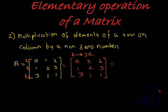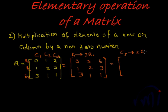We can also do the same elementary operation on columns. Suppose we take column c3 and multiply by 2: c3 becomes 2 times c3. We get 2×2=4, 2×3=6, 2×1=2, and the rest of the columns remain the same. This is the second elementary operation.